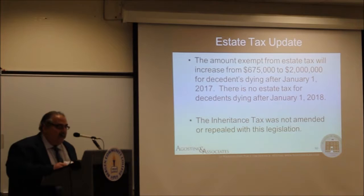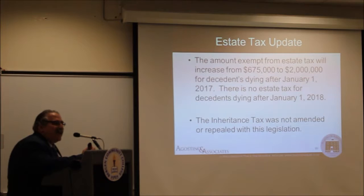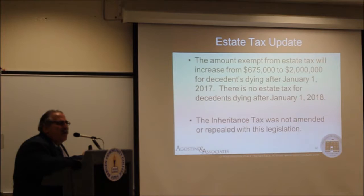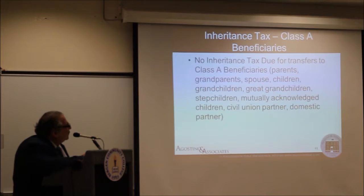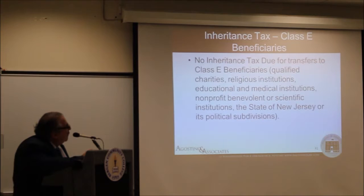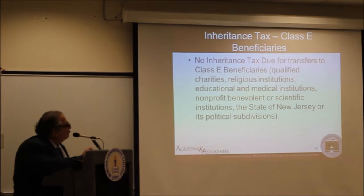New Jersey is getting rid of the estate tax, so there will be less work there. For this year, the threshold went from $675,000 to $2 million. But the common misconception is that the inheritance tax was eliminated at the same time — that is not true. The inheritance tax is still here. Class A beneficiaries — parents, grandparents, spouses — are still good, and there's no inheritance tax when you give to charities. New Jersey likes you to be charitable.